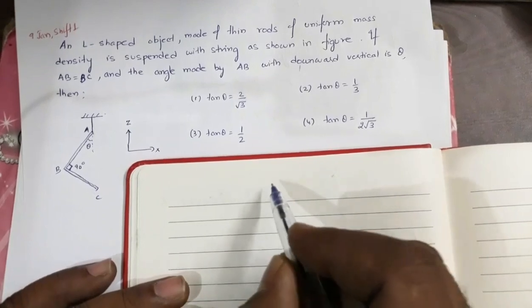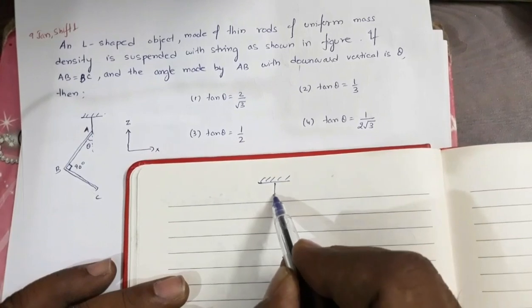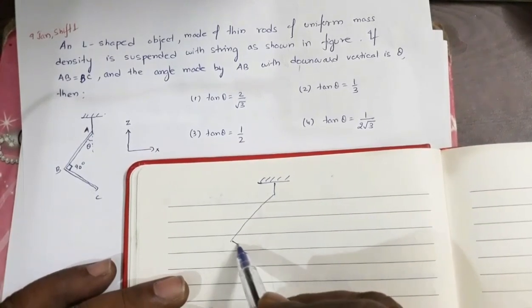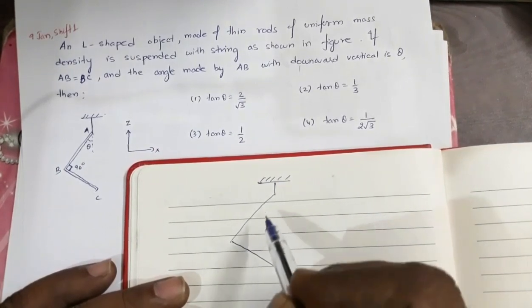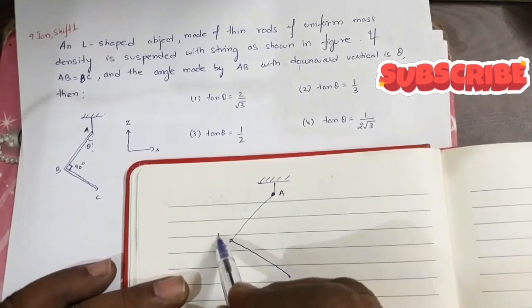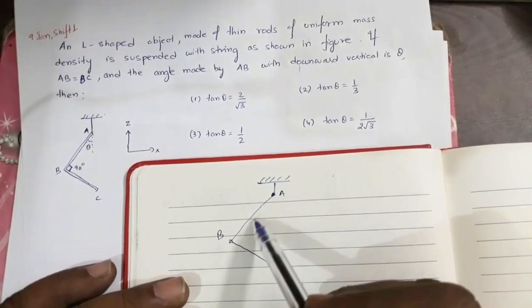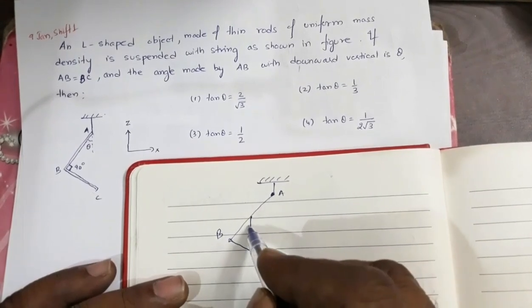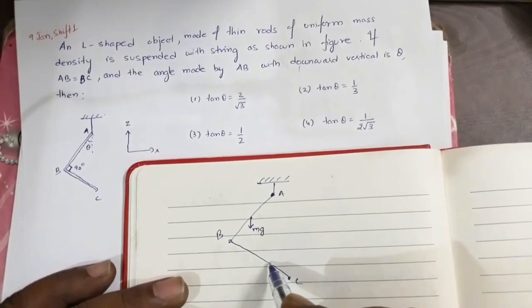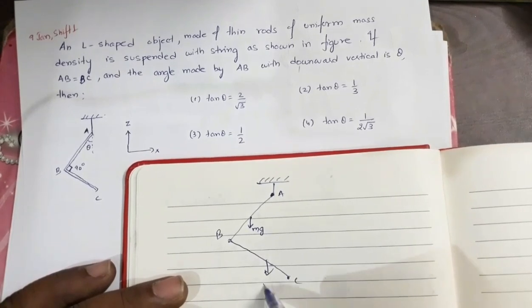Let me redraw this diagram. This is the rigid support, this is the string, this is the rod, and the other piece of rod. These rods are identical. This is A, this point is B, and this point is C. Now, this system is in equilibrium. The weight of this rod acts from the center — this is MG — and the weight of this rod also acts from the center, so this is also MG.